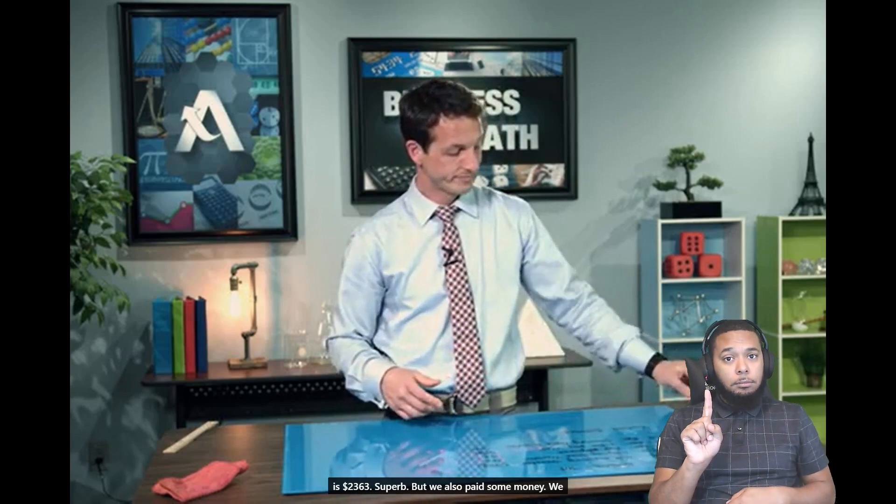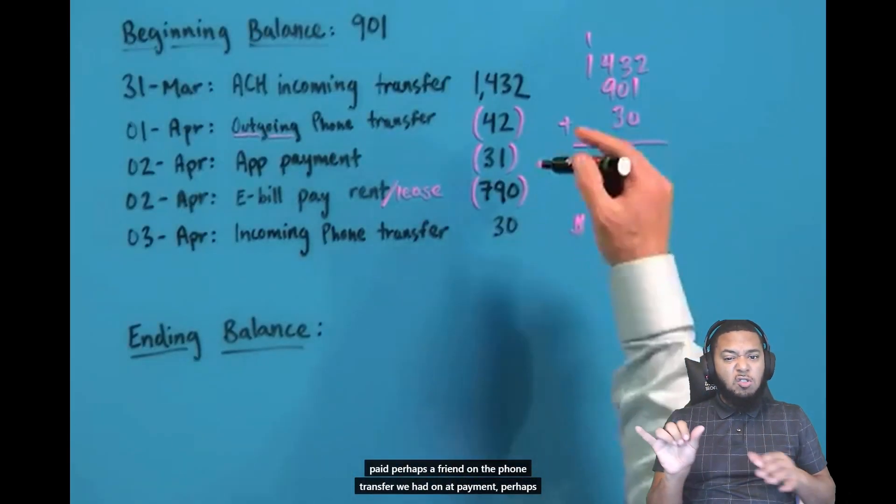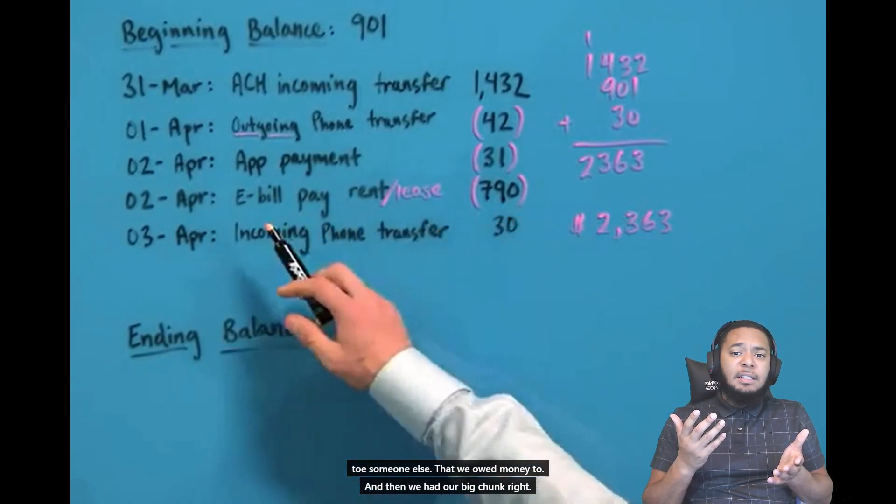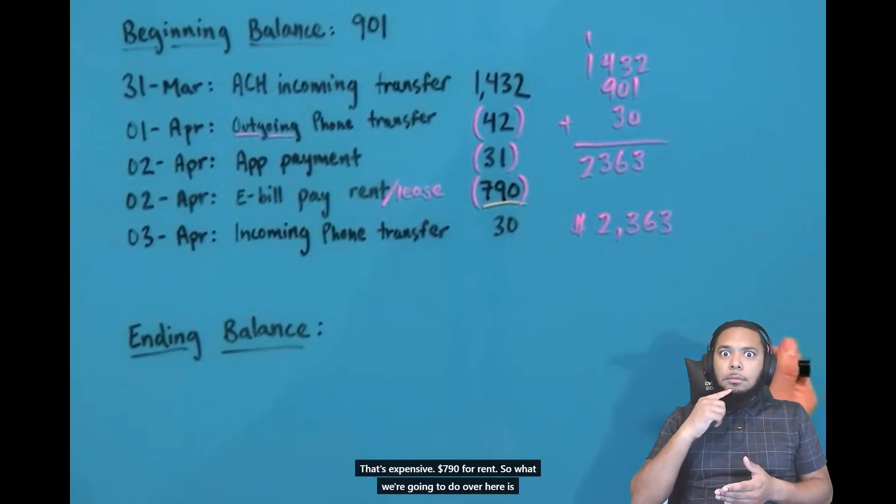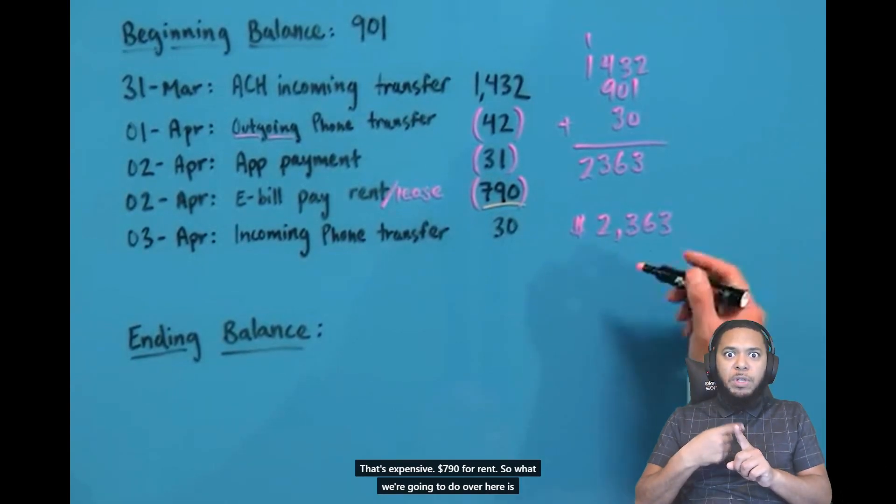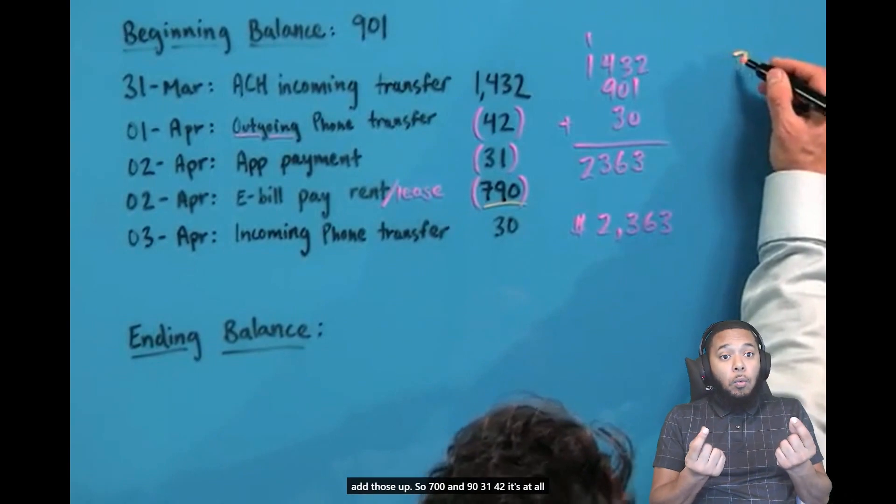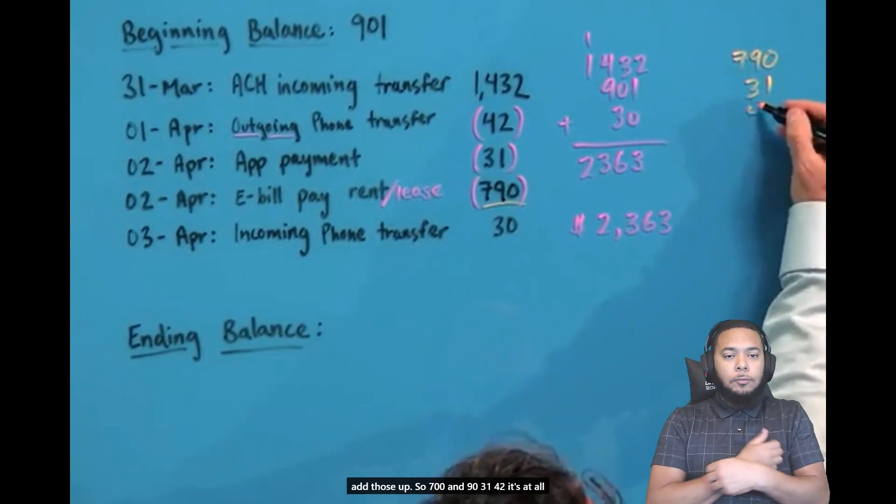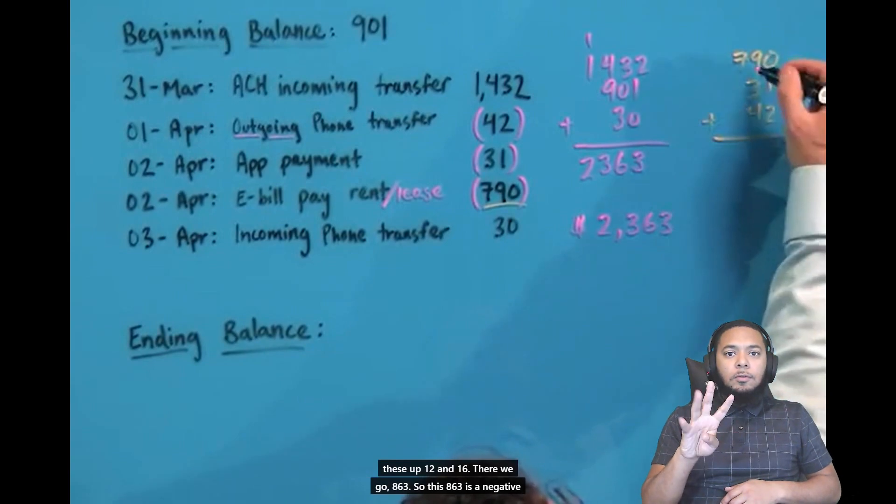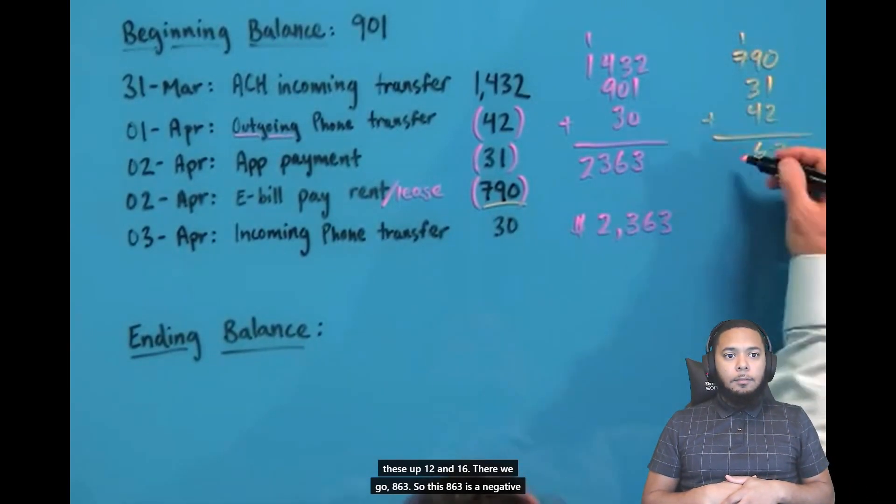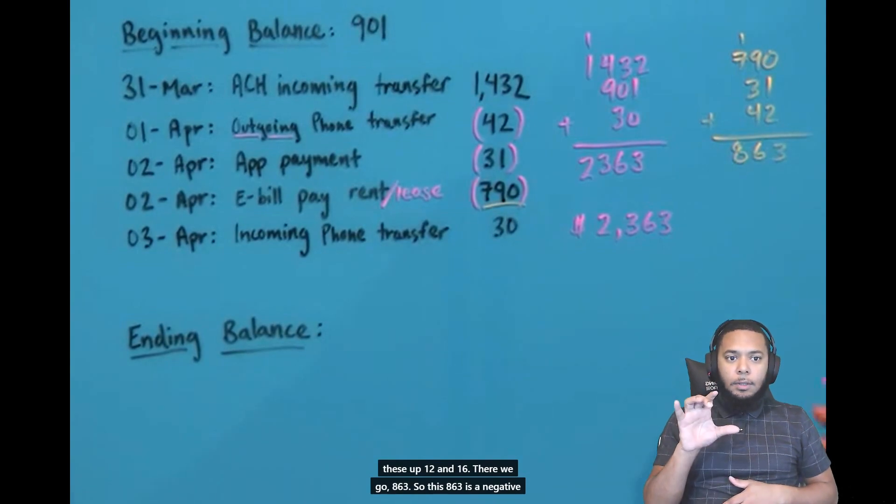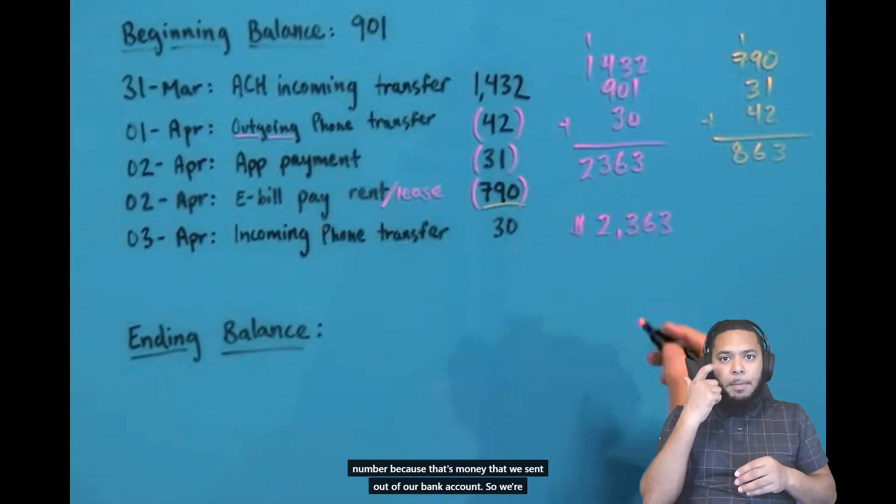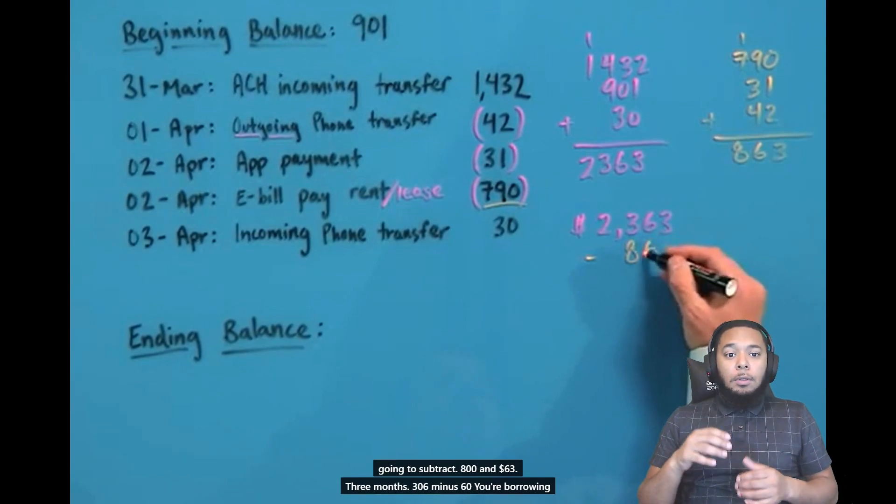But we also paid some money. We paid perhaps a friend on a phone transfer. We had an app payment, perhaps to someone else that we owed money to. And then we had our big chunk. That's expensive, $790 for rent. So what we're going to do over here is add those up. So 790, 31 and 42. So this 863 is a negative number because that's money that we sent out of our bank account. So we're going to subtract $863.